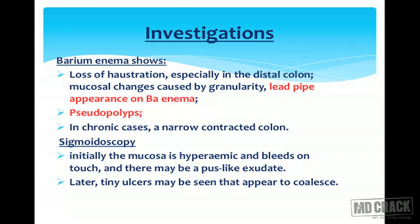On sigmoidoscopy, initially the mucosa is hyperemic and bleeds on touch, and there may be a pus-like exudate. Later, tiny ulcers may be seen that appear to coalesce.